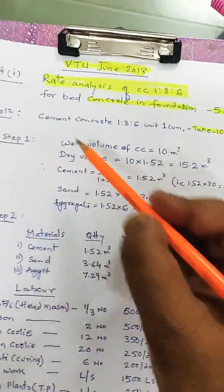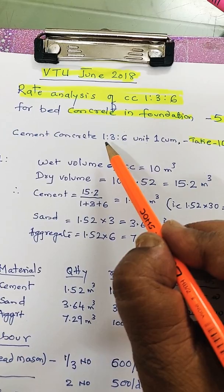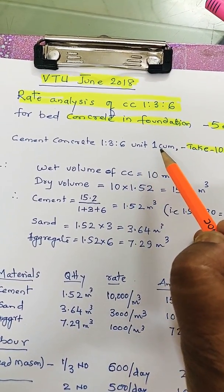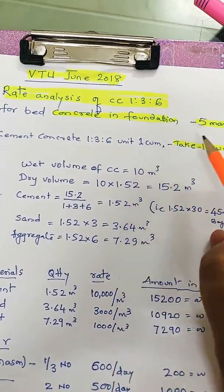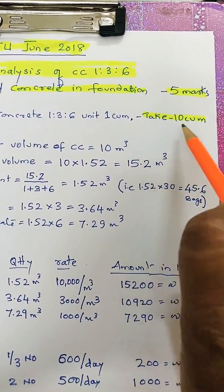Solution: First, cement concrete is in the ratio 1:3:6. You have to calculate for unit 1 cubic meter, but for calculation purpose you have to take 10 cubic meters, because laborers and materials you have to calculate for 10 cubic meters.